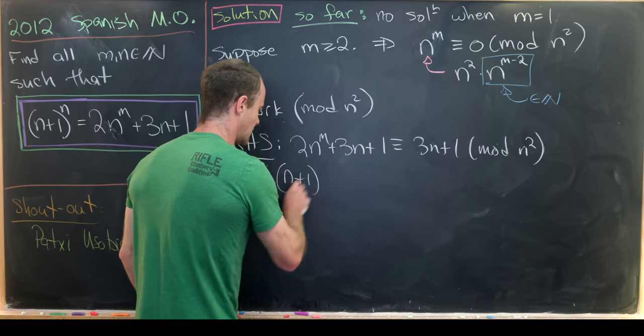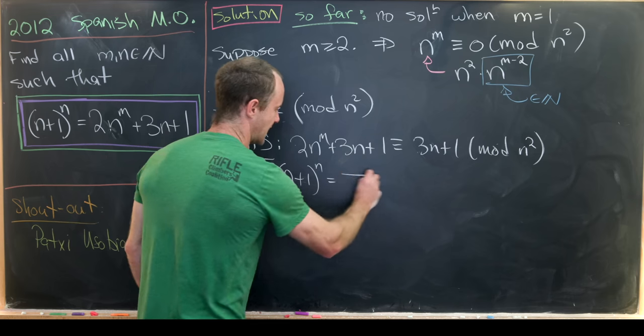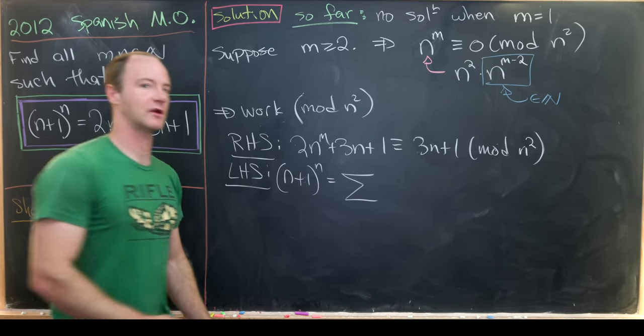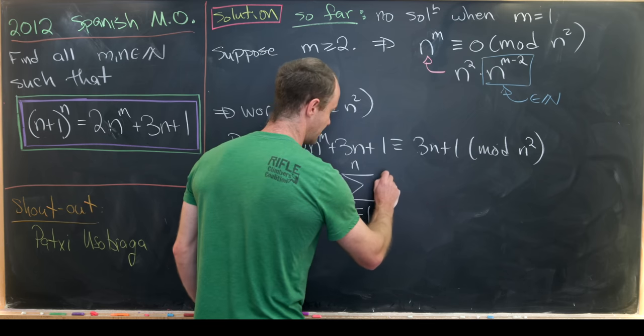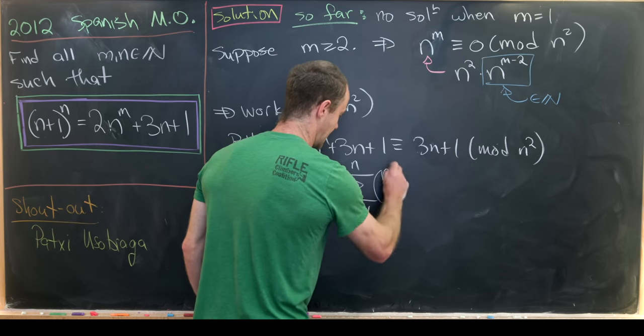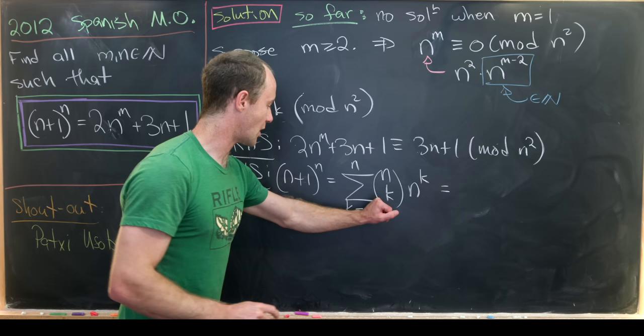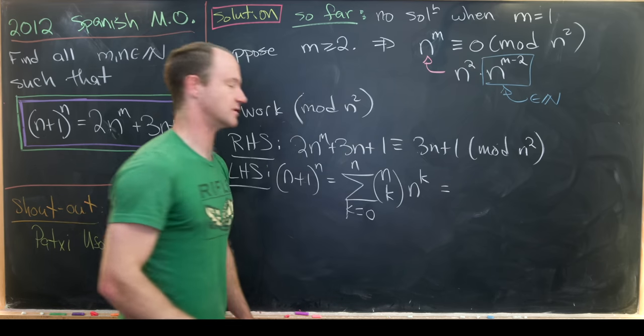Okay. So let's look at the left-hand side. So we've got (n+1)^n, but we can expand that using a binomial formula. Well, that'll be the sum, as k goes from 0 to n, of n choose k times n^k.